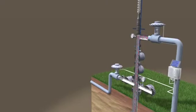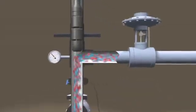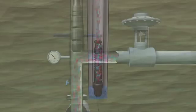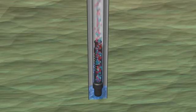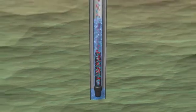During after flow, the plunger rests in the lubricator at the top of the well. As production decreases, liquids begin to accumulate in the bottom of the tubing.